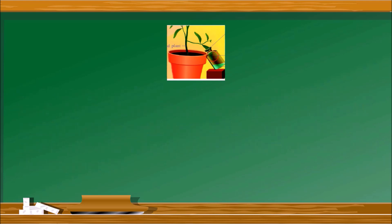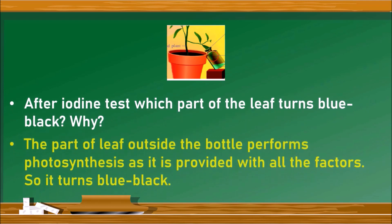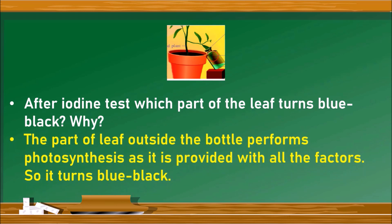After the iodine test, the part of the leaf outside the bottle turns blue-black because it was provided with all factors such as sunlight, carbon dioxide, and water, and thus performed photosynthesis. The part inside the bottle did not turn blue-black because it was prevented from accessing carbon dioxide.